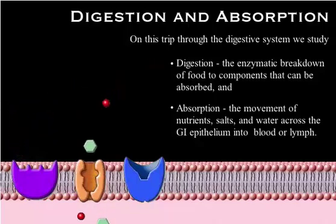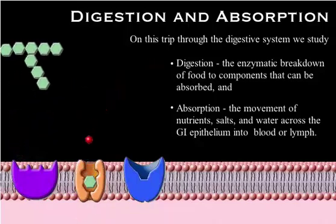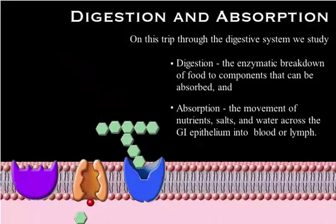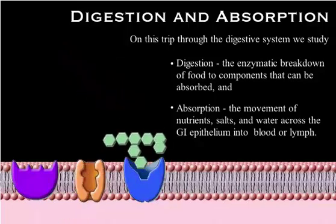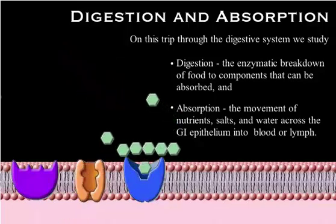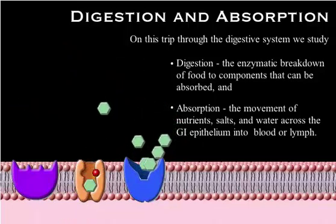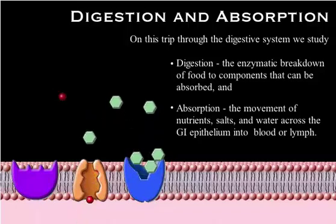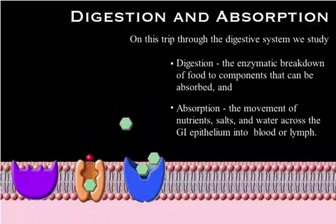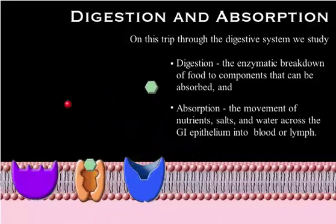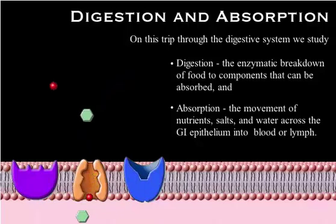On this trip through the digestive system, we will study digestion — the enzymatic breakdown of food to components that can be absorbed — and absorption, the movement of nutrients, salts, and water across the GI epithelium into blood or lymph.